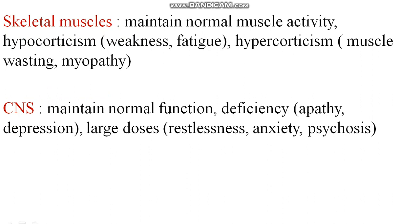Coming to the CNS: glucocorticoids maintain the normal function of the central nervous system. If there is deficiency, there can be apathy and depression. If given in large doses, there can be restlessness, anxiety, and psychosis. So this is what happens in the central nervous system.